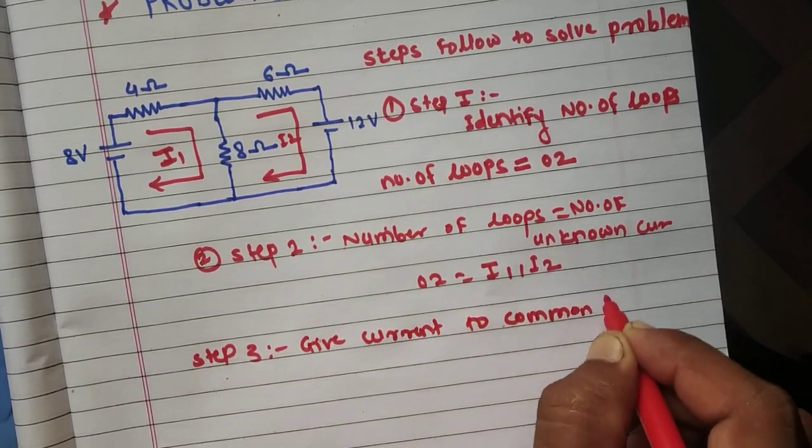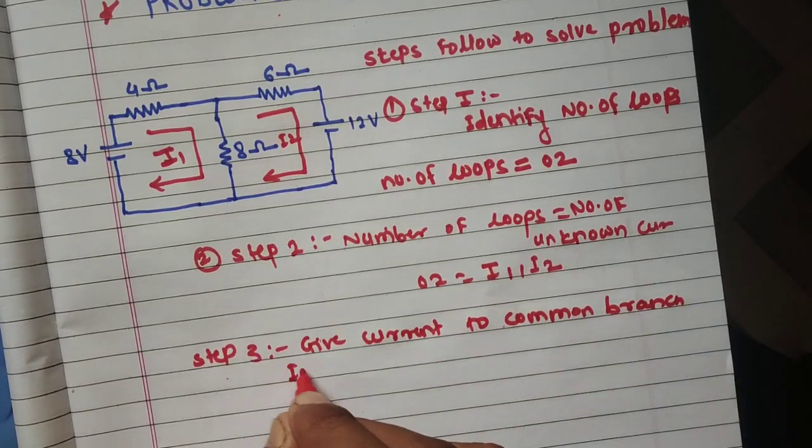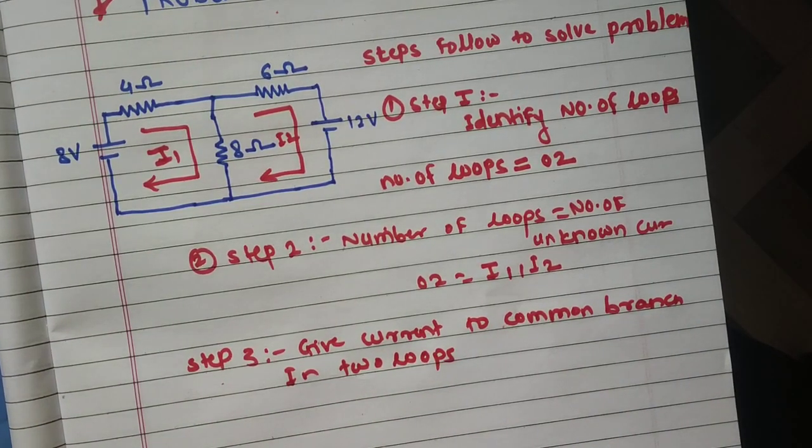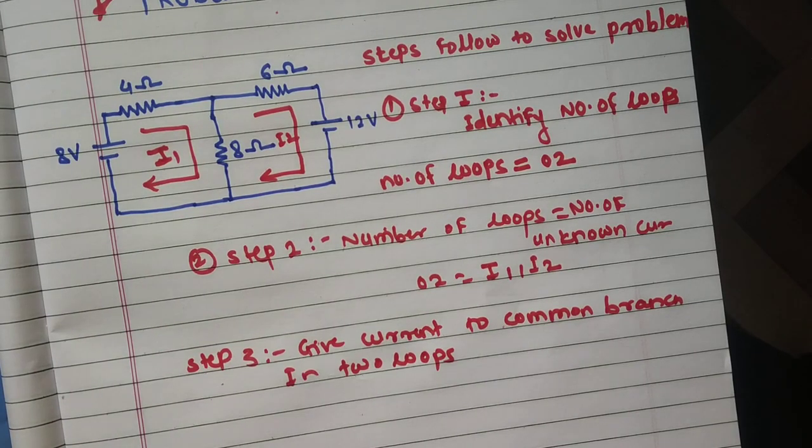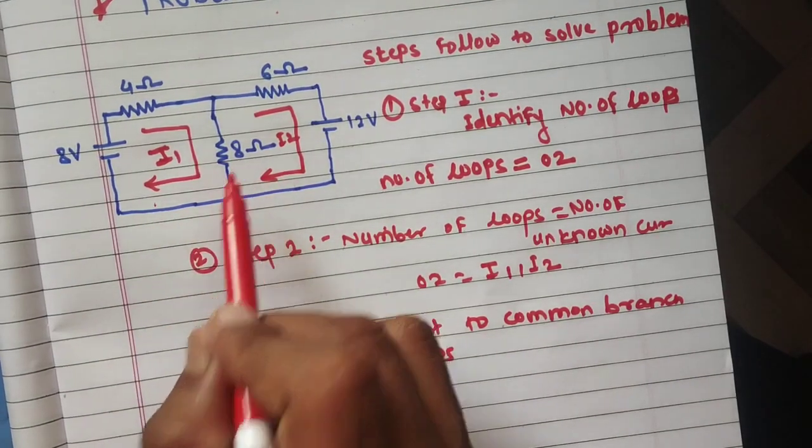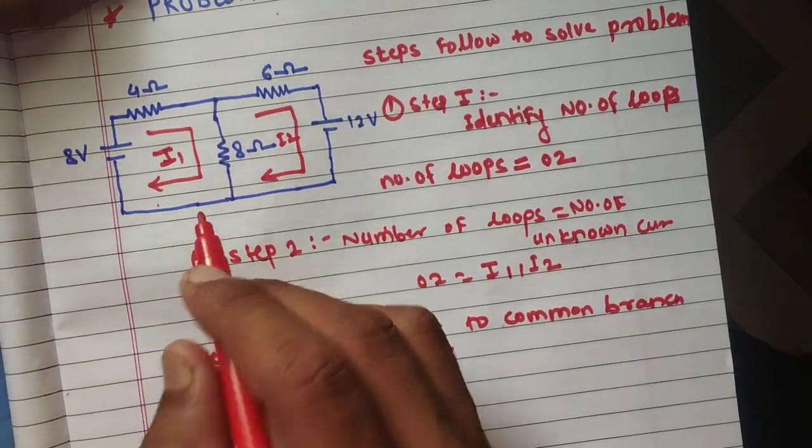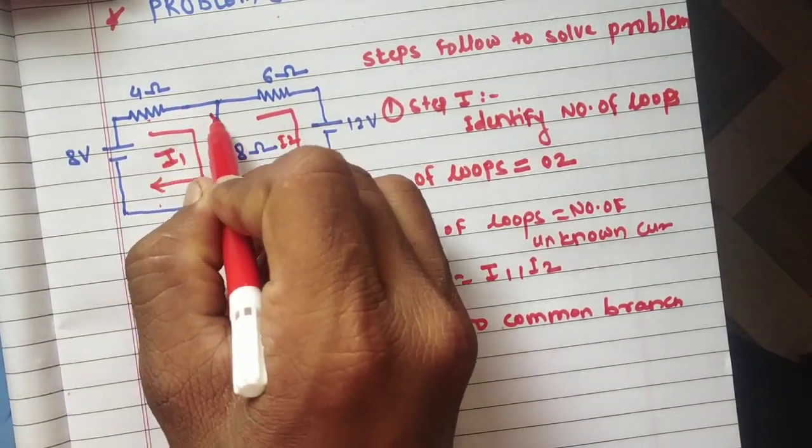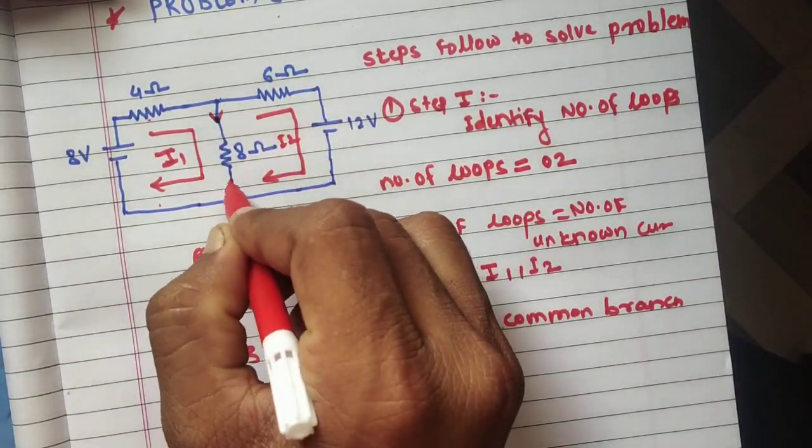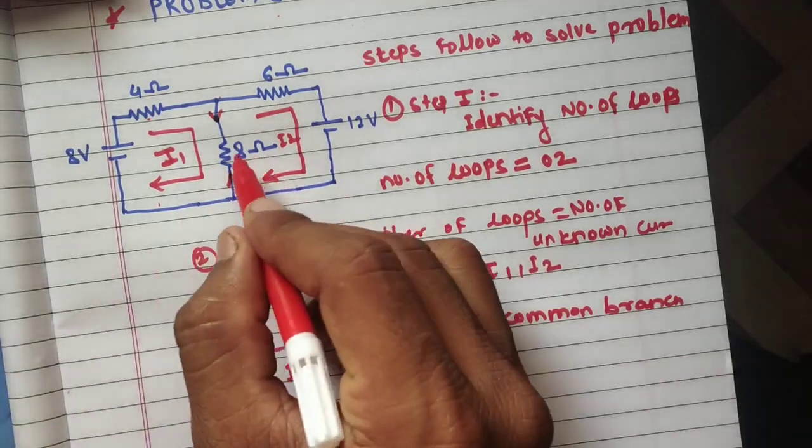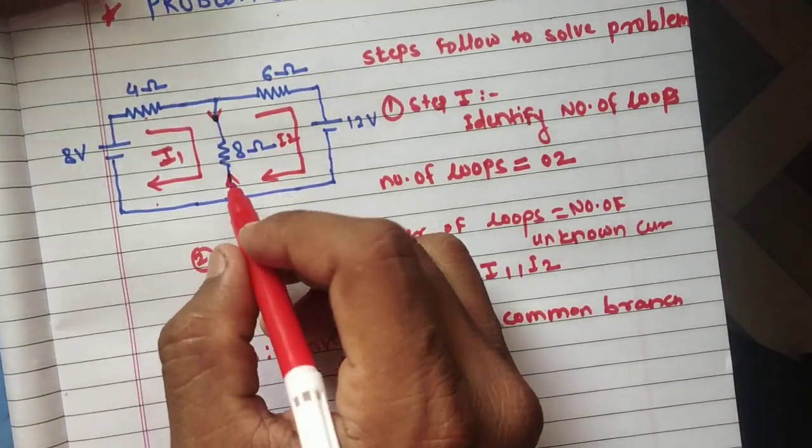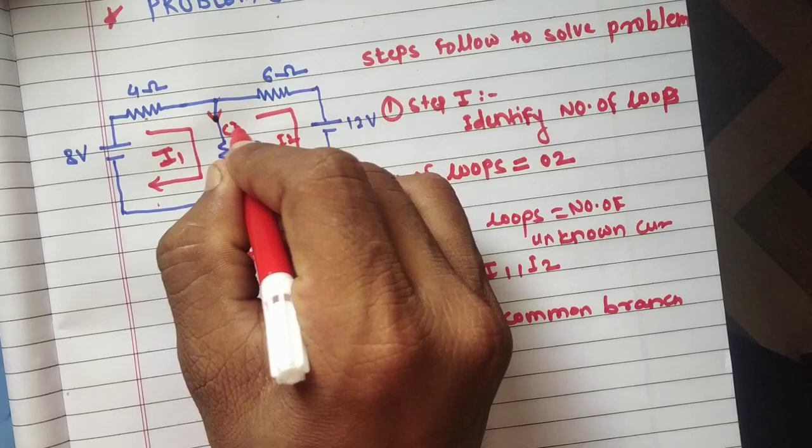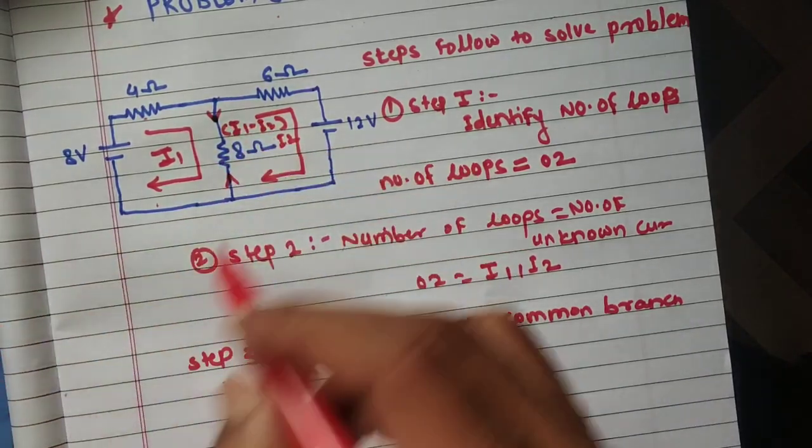Step three: find the common branch in two loops. So two loop currents, i1 current is through this direction and i2 current is in this direction. i1 and i2 are opposite, so opposition, so i1 minus i2. If suppose the two directions are same, then i1 plus i2, add them.